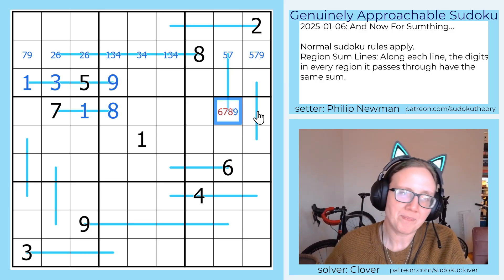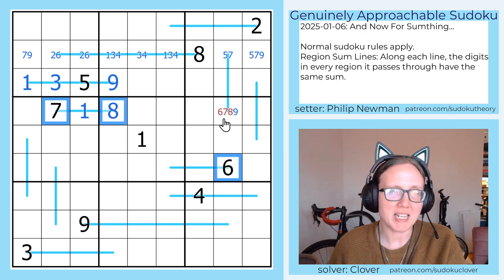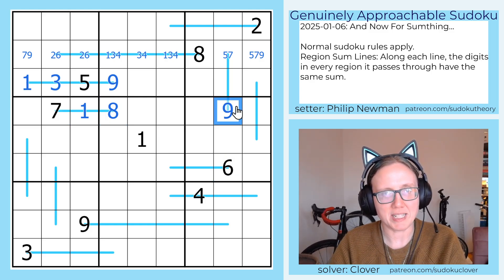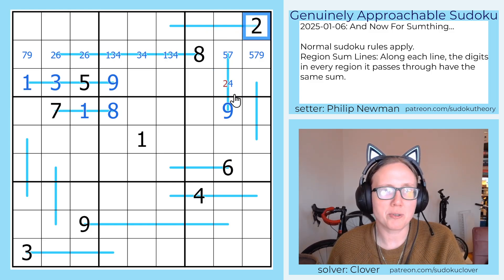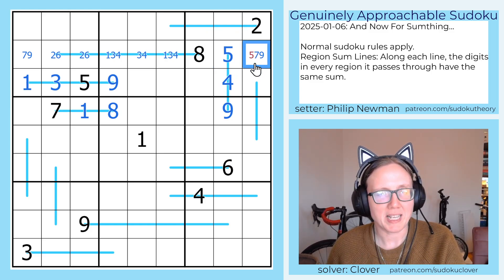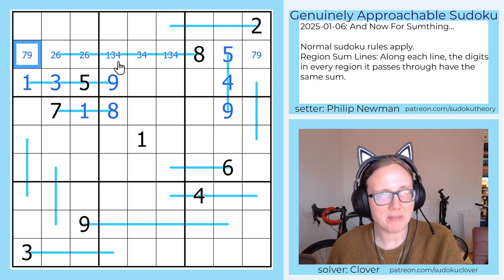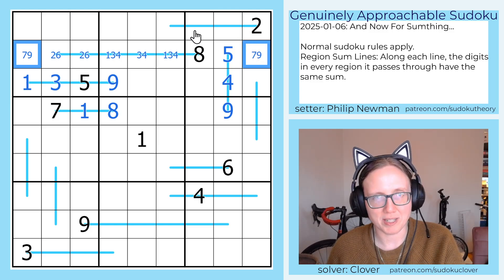It's 6, 7, 8, or 9. And now I have a 6, 7, and 8 looking at that cell, so that is in fact a 9. Because this is 5 or 7, that cell will have to contain 2 or 4. There's already a 2 in the region, so that's a 4, and that is a 5, and now I have a 7, 9 pair on the outskirts of this row.